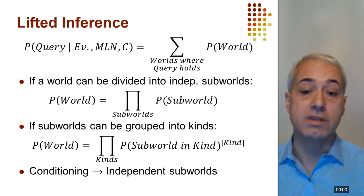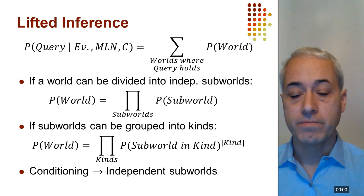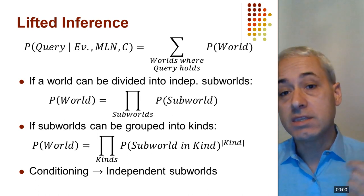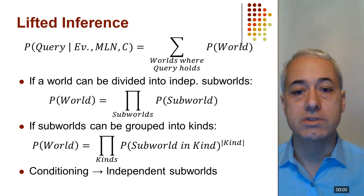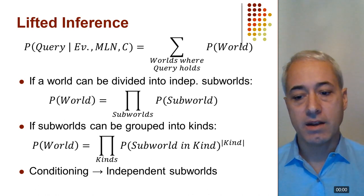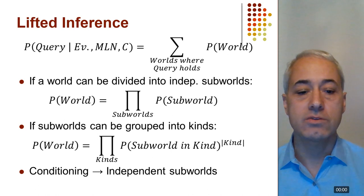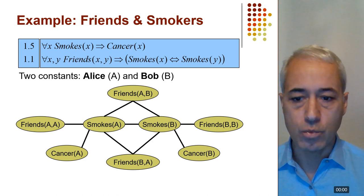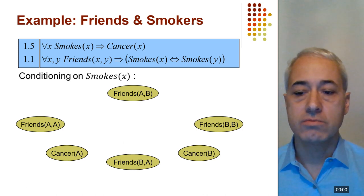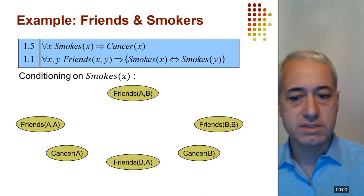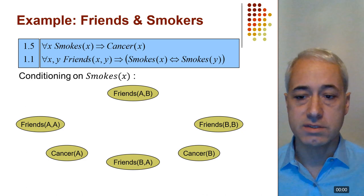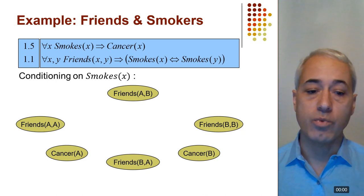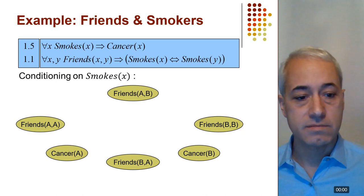Further, if the sub-worlds can be grouped into kinds such that all sub-worlds of one kind have the same distribution, then the probability of a world is a product over kinds — the probability of a sub-world in the kind raised to the number of sub-worlds in that kind. This gives a potentially exponentially large decrease in computation. Conditioning tends to create independent sub-worlds: once we have evidence, that tends to break up connections, and we look at the remaining pieces and summarize them into a small number of kinds.